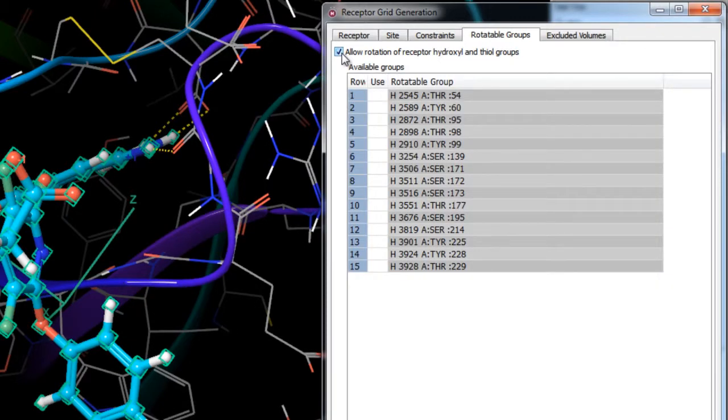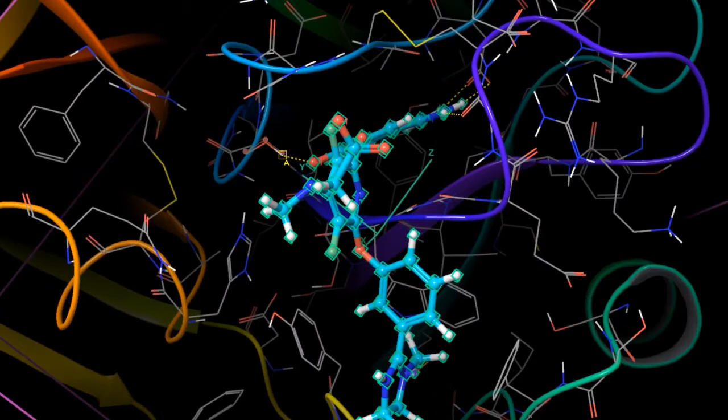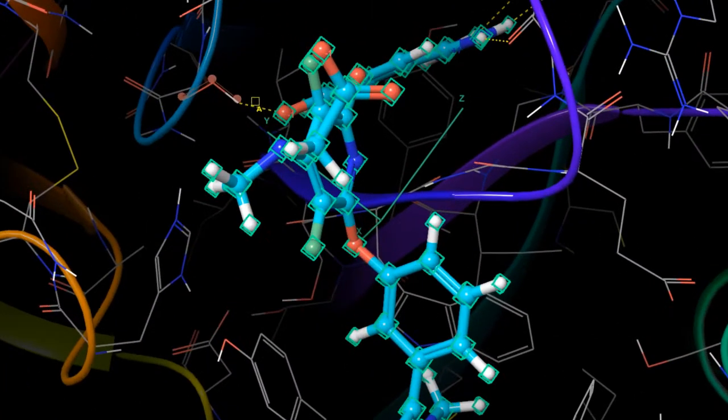To see a list of available rotatable groups within the grid box, you can either check the box to use that particular rotatable group, or simply ensure pick groups is turned on and then pick the hydrogen atom of the hydroxyl or thiol in the workspace.